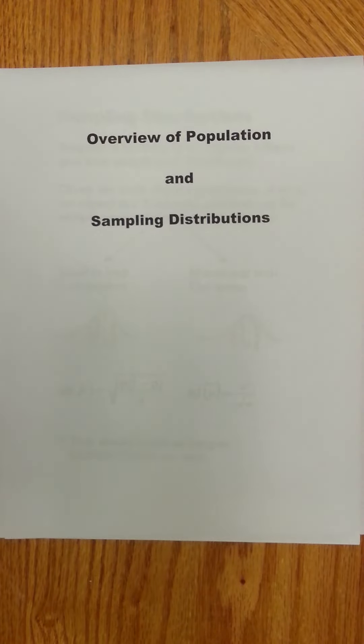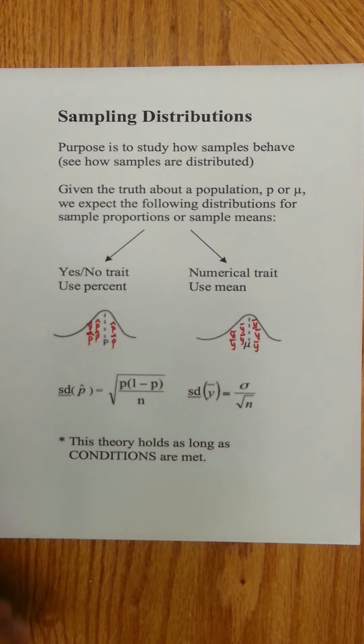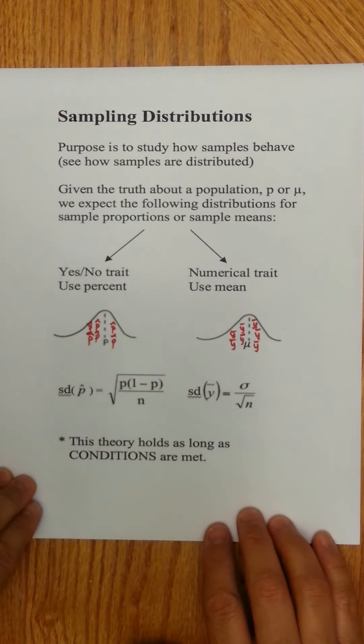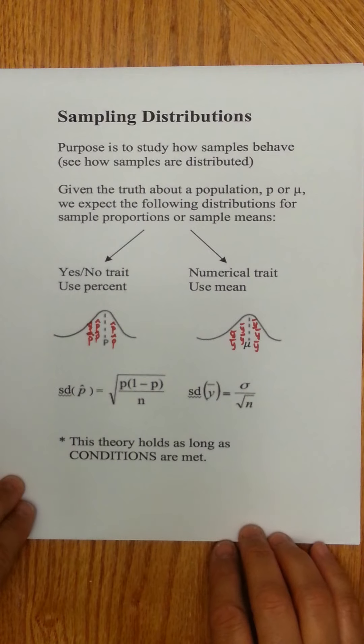Hello. In this video I want to compare population distributions and sampling distributions for a yes-no trait and a numerical trait. Previously in another video I had compared sampling distributions, and essentially that was really because we want to know how samples behave.